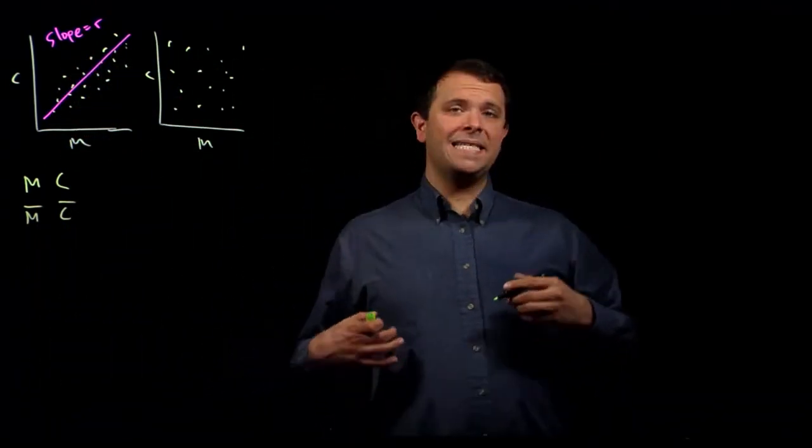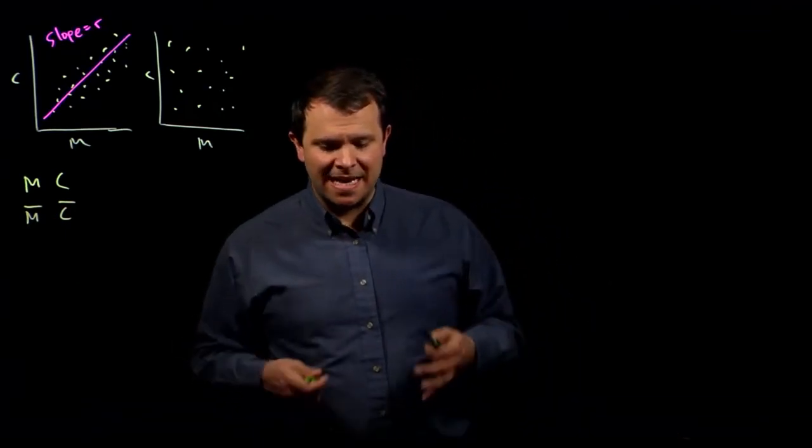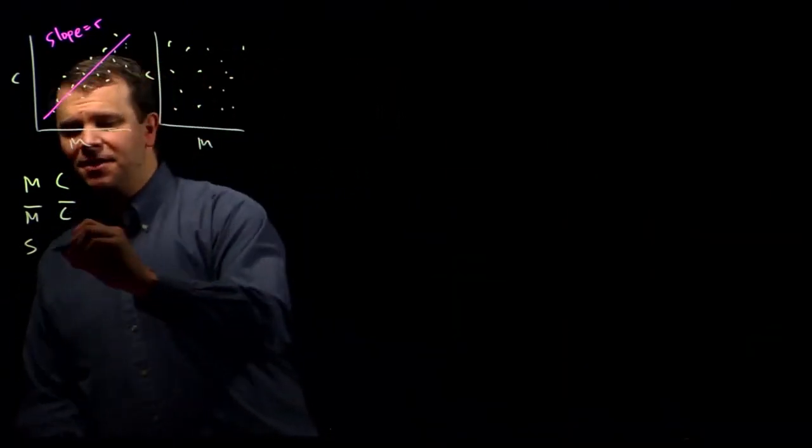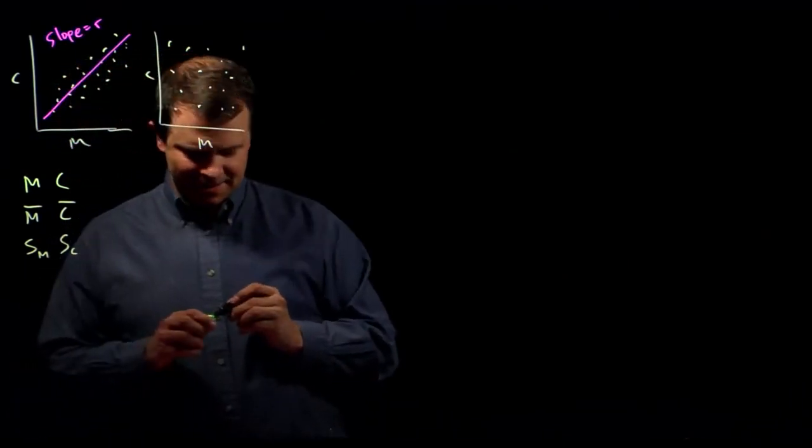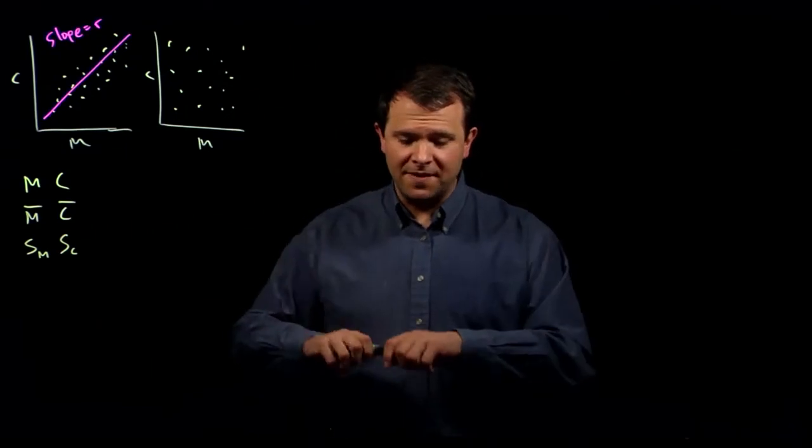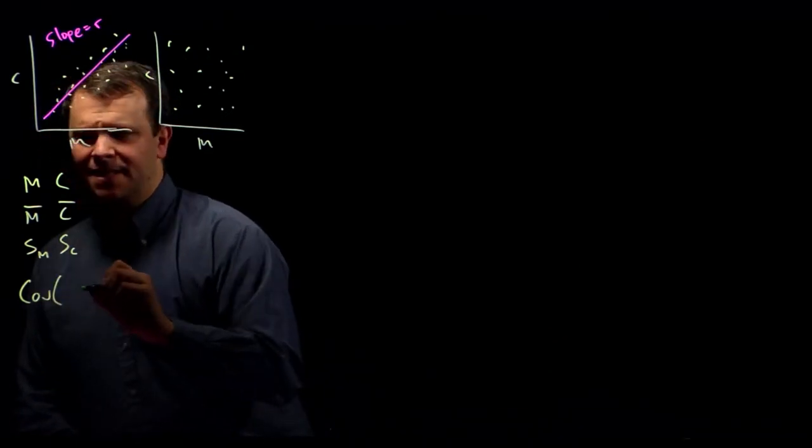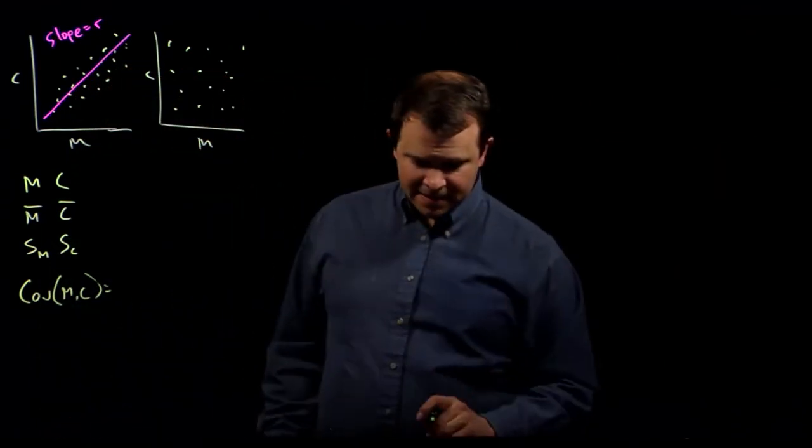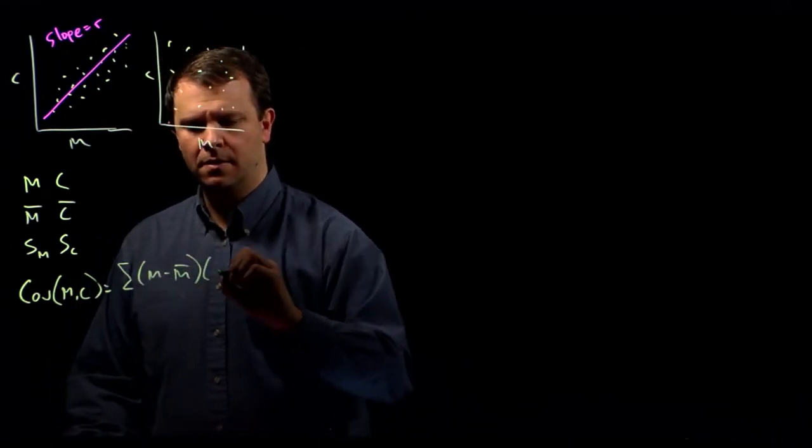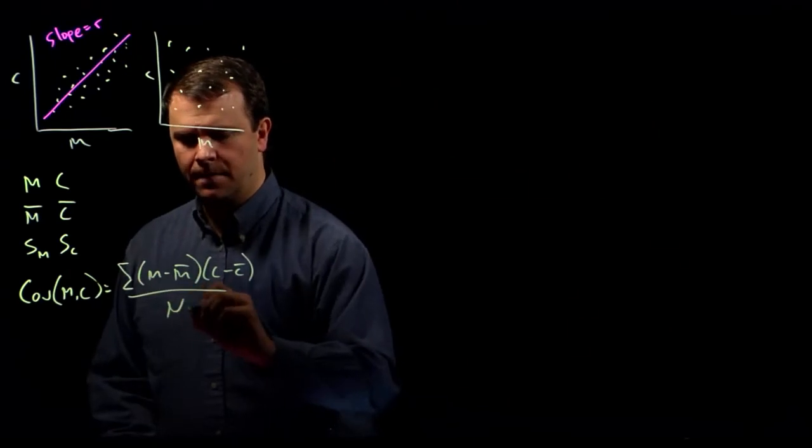And then, we can ask how likely it is that the data sets is for paired observations of these two data sets to vary together. So, first, we compute the standard deviations SM and SC. And then, we ask, again, how likely it is for those observations to vary together. And we call this measurement the covariance. And so, the covariance of M and C is just the sum of M minus M bar times C minus C bar over N minus 1.